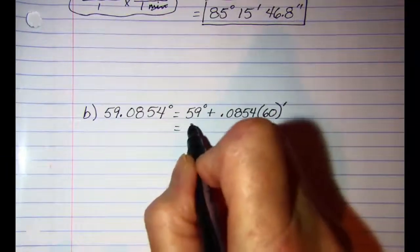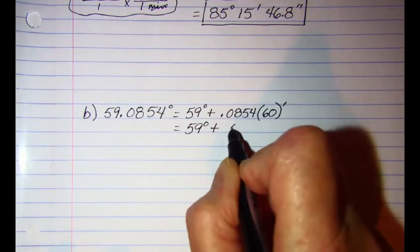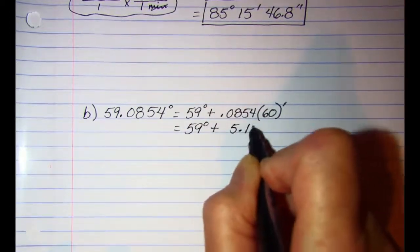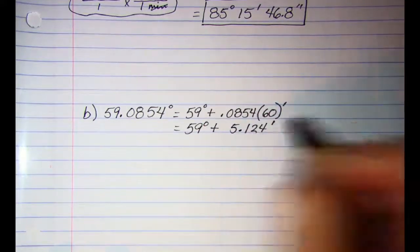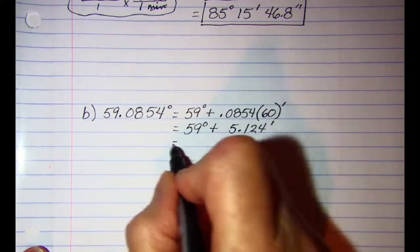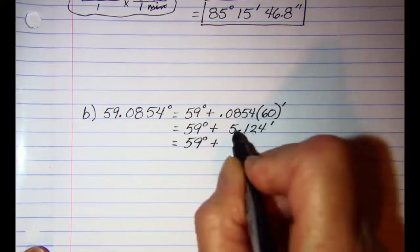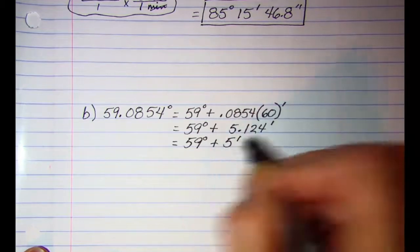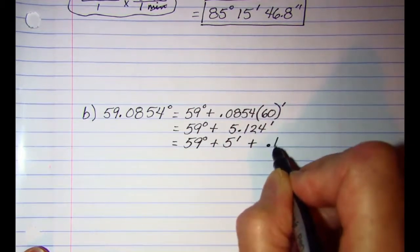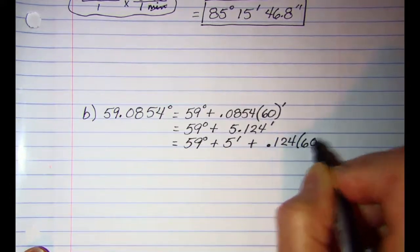If we do the multiplication, we have 59 degrees plus 5.124 minutes, so now I can break that up, 5 minutes, and then 0.124 times 60 seconds.